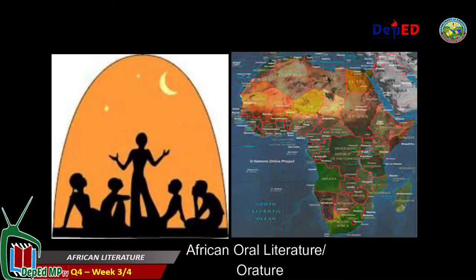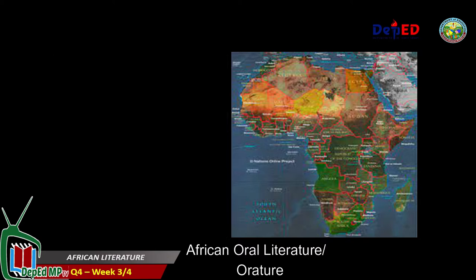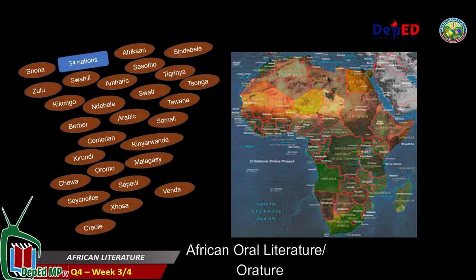The oral literature or orature in this continent is rich and diverse, thanks to the fact that Africa is made up of 54 nations, each nation having several tribes that speak different languages. In fact, Africa is home to about a thousand languages including Shona, Zulu, Swahili, Ndebele, Ikongo, Oromo, and many more.